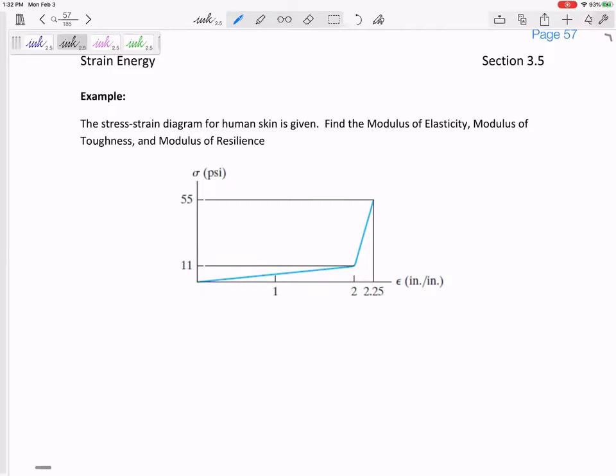The first linear portion is the elastic portion, then the next portion is the yielding region. Even though this one has different slopes than we're used to, the first portion is the elastic region, the next portion's right here.